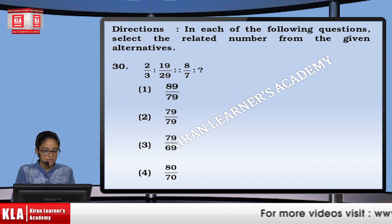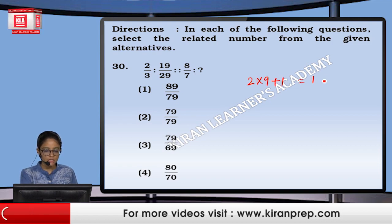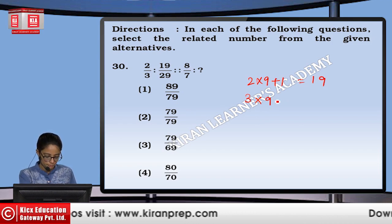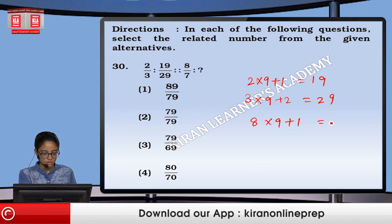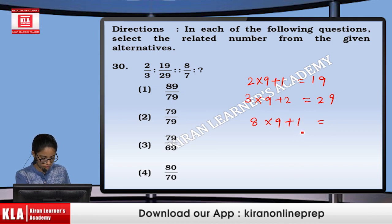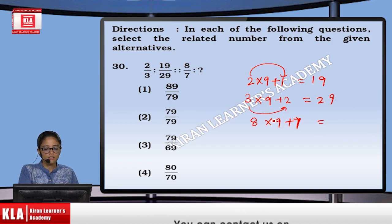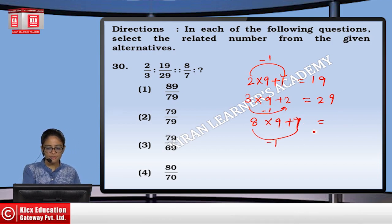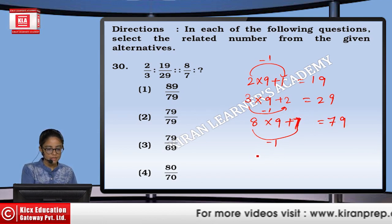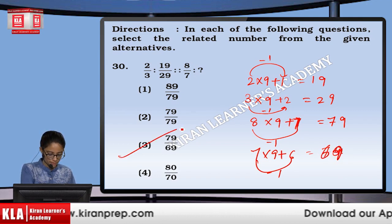Next, 2 is to 3. 2 into 9 plus 1 gives us 19. Similarly, 3 into 9 plus 2 gives us 29. In case of 8, we are adding the digit one less — so 8 into 9 plus 7 gives us 79. Similarly, 7 into 9 plus 6 gives us 69. So the option will be the third one.